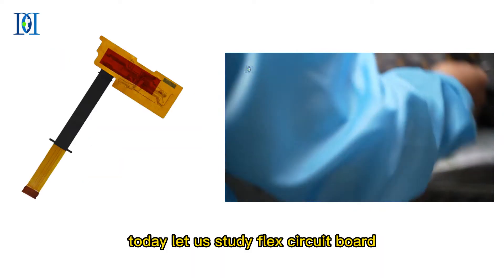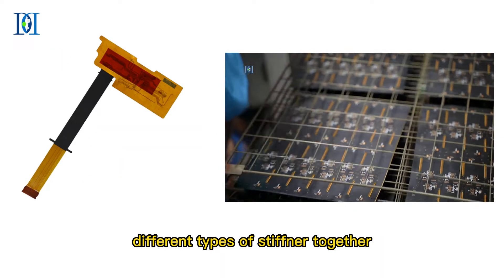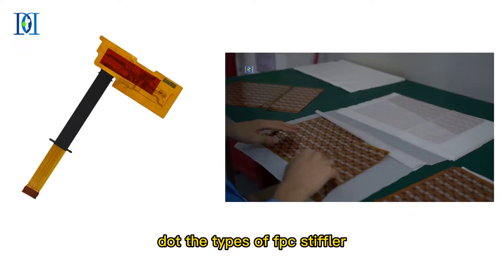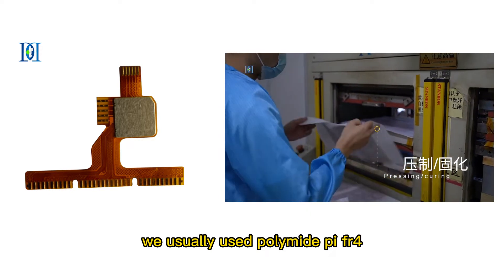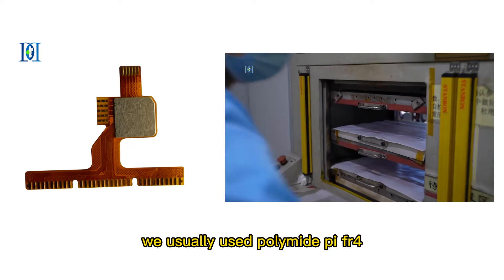Today let us study flex circuit board different types of stiffener together. In general, there are three types of stiffener we usually use: Polyimide PI, FR4, and stainless steel.